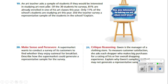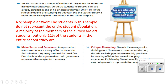Number 19. An art teacher asked a sample of students if they would be interested in studying art next year. Of the 30 students he surveyed, 81% are already enrolled in one of his art classes, but only 11% of the students in the school are studying art this year. Did the teacher survey a representative sample? No — the students in this sample do not represent the entire student population. A majority of the members surveyed are art students, but only 11% of the school studies art, so what about the other 89%?